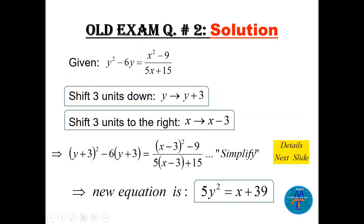The whole idea is that the shifting is not that difficult if you get the correct numbers for x and y. The details of how to simplify from the substituted form to the final equation are on the next slide, so you can do it yourself. You have to use the squared formula: (a + b)² and (a − b)², et cetera.